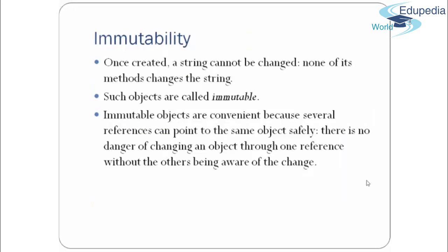Immutability: a string, once created, cannot be changed. None of its methods change the string — objects of the string class are immutable. Immutable objects are convenient because several references can point to the same object safely. There is no danger of changing an object through one reference without the other being aware of the change. If one reference tries to change the string, the actual object won't be changed; instead, a new string literal is formed.